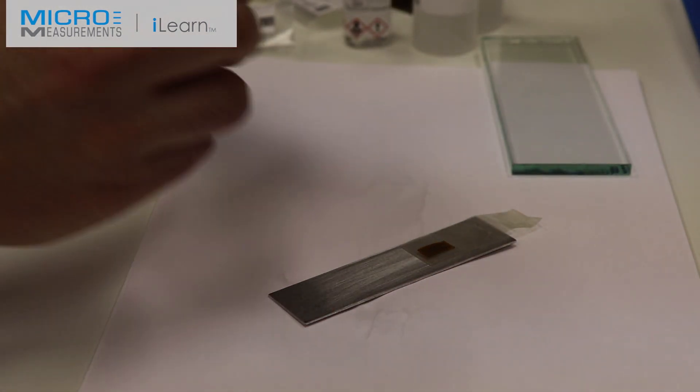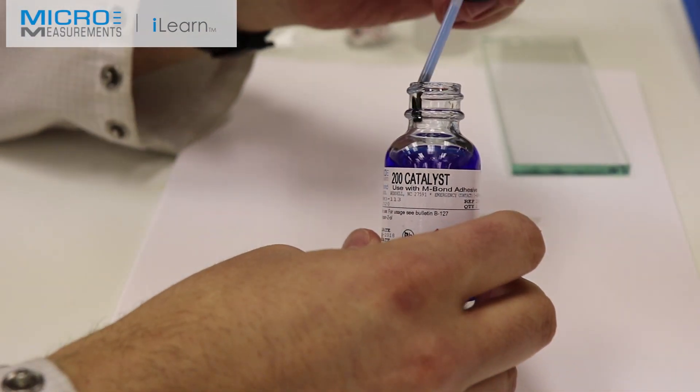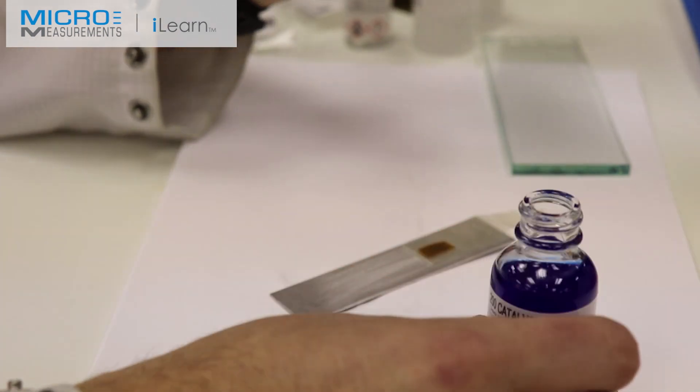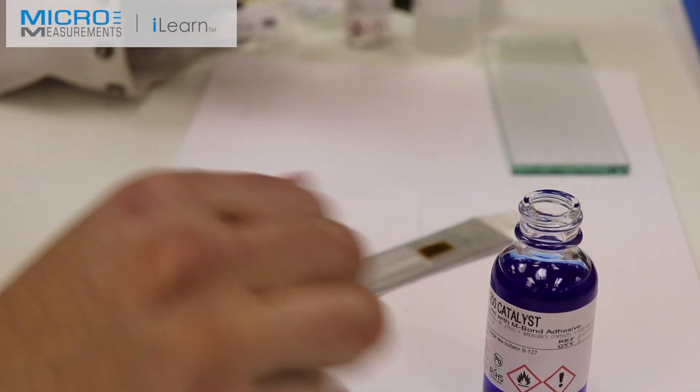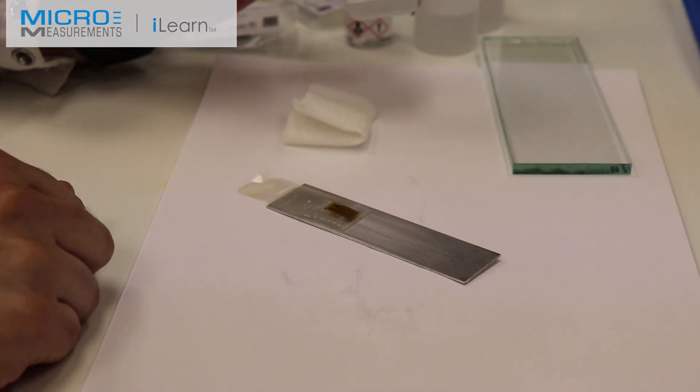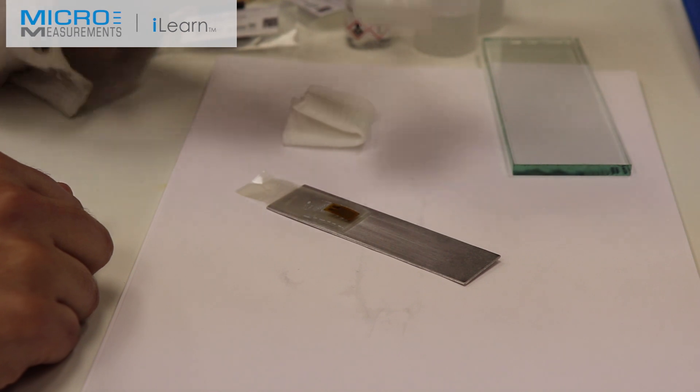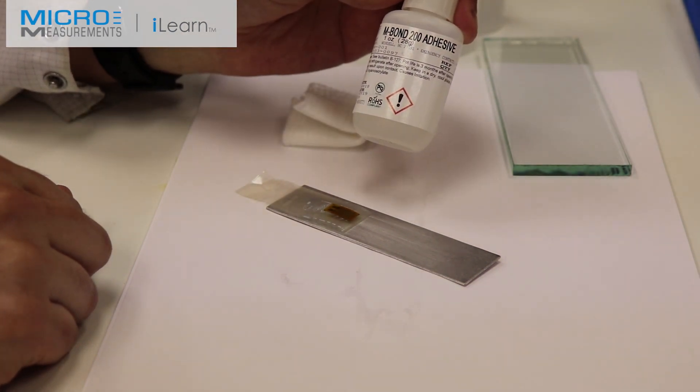On the inside of the neck of the bottle of the Catalyst-C, he's going to hit it one or two times, enough to get most of the material out. Then he's going to squeegee across it and lift off on the tape. We allow one minute of air-dry time. Now that we've finished our application of the strain gauge, we need to apply the adhesive. We waited our one minute of air-dry time for the Catalyst-C.